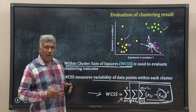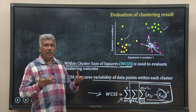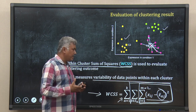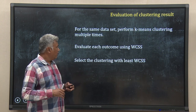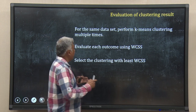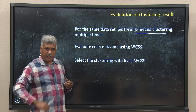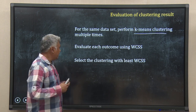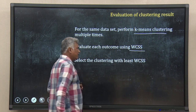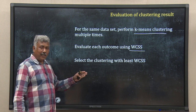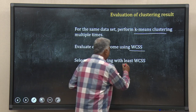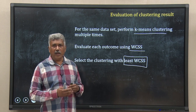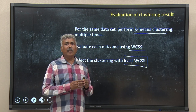WCSS is a measure of variability, or in other words, a measure of homogeneity within each cluster. A good clustering outcome should have the lowest WCSS. So for a particular dataset, you run the same k-means clustering algorithm repeatedly — maybe 10 or 15 times. For each run you may get a different output, and for each case you calculate the WCSS. You then take the result of that particular run which gives you the least WCSS value. That is how we evaluate the outcome of k-means clustering and select the best result.